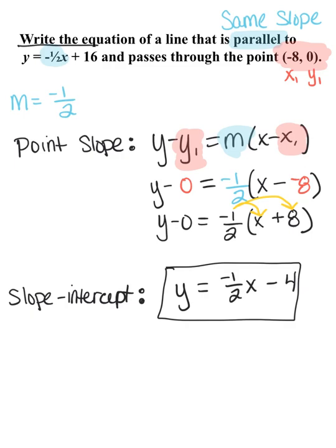So our slope-intercept form for our equation is y equals negative 1/2 x minus 4. And again, that should be parallel to our other equation in the problem, y equals negative 1/2 x plus 16.